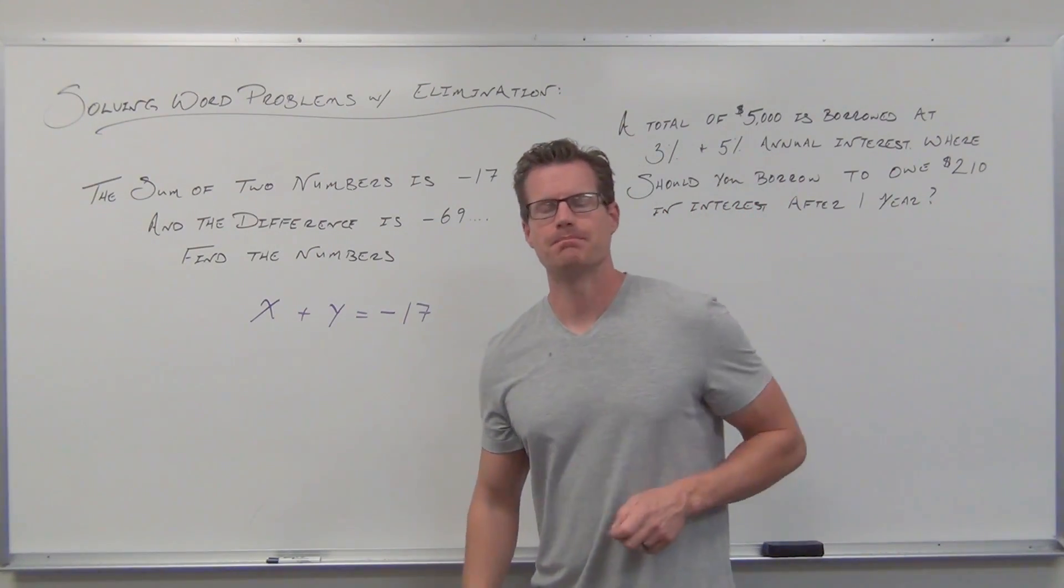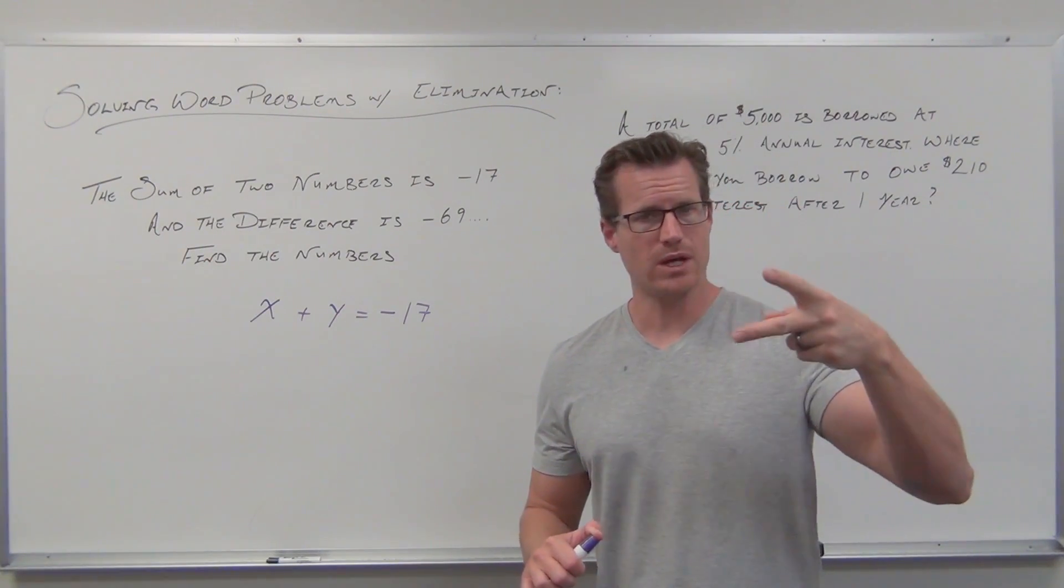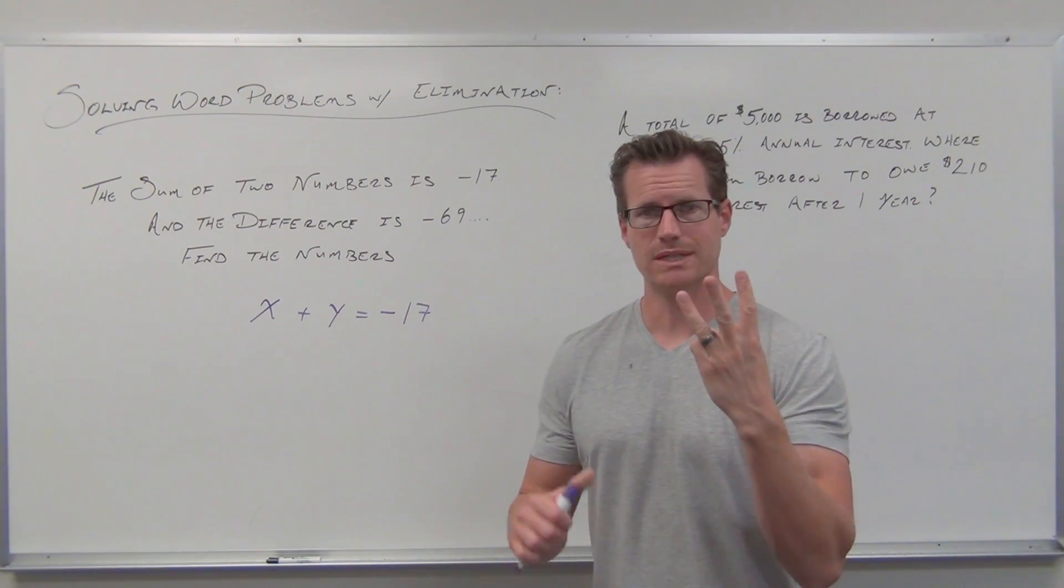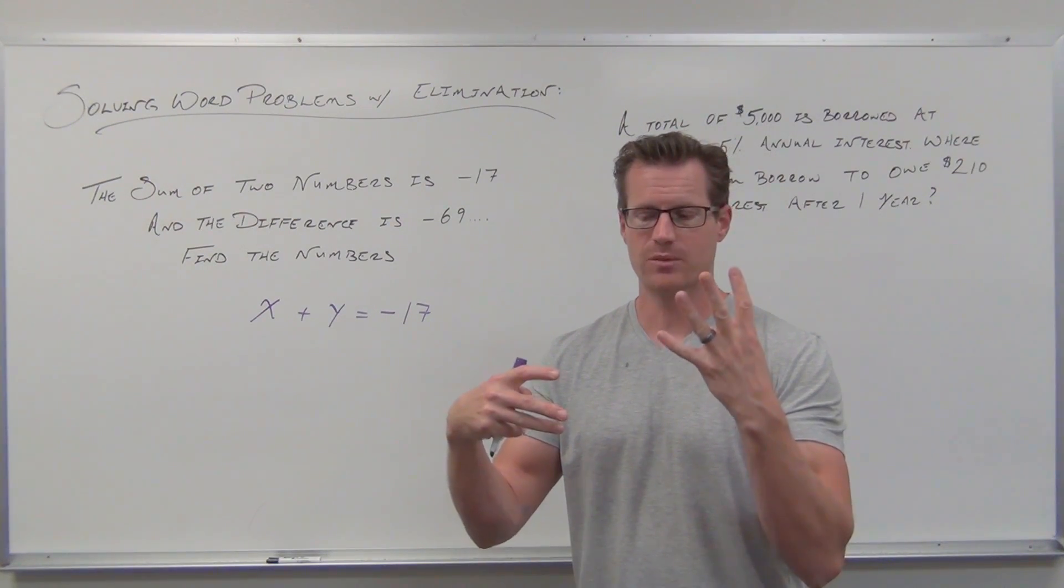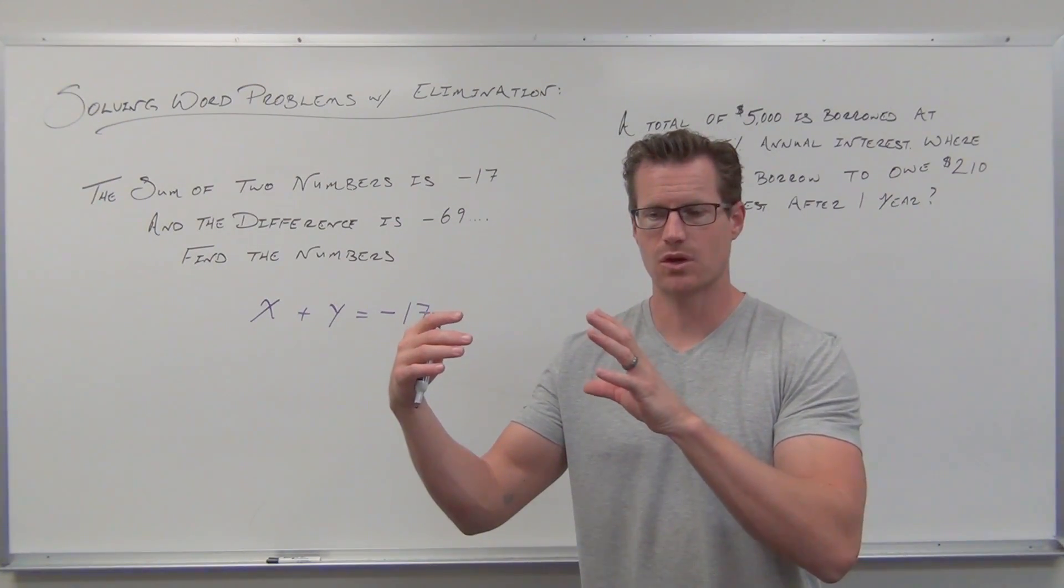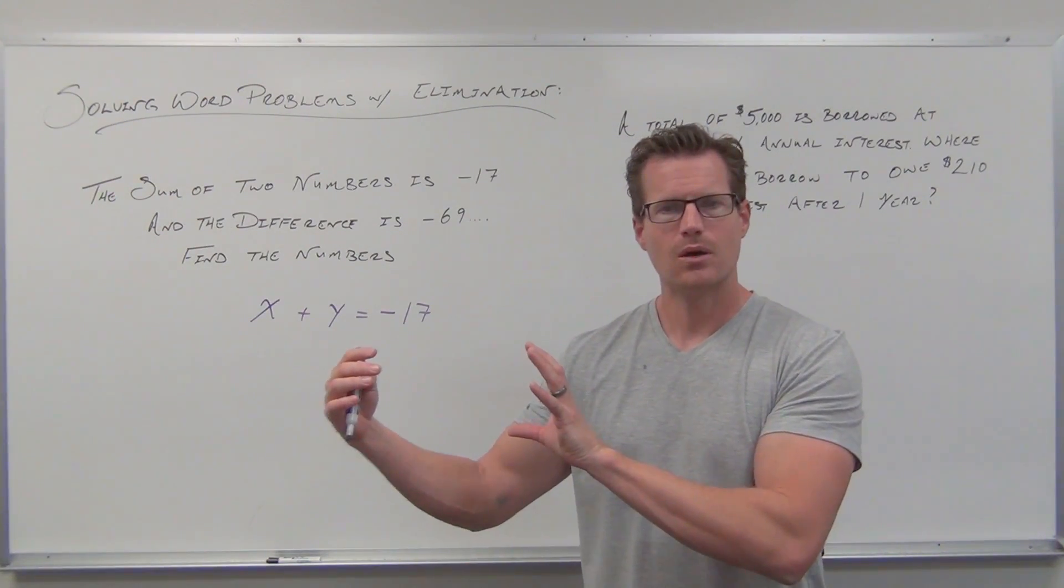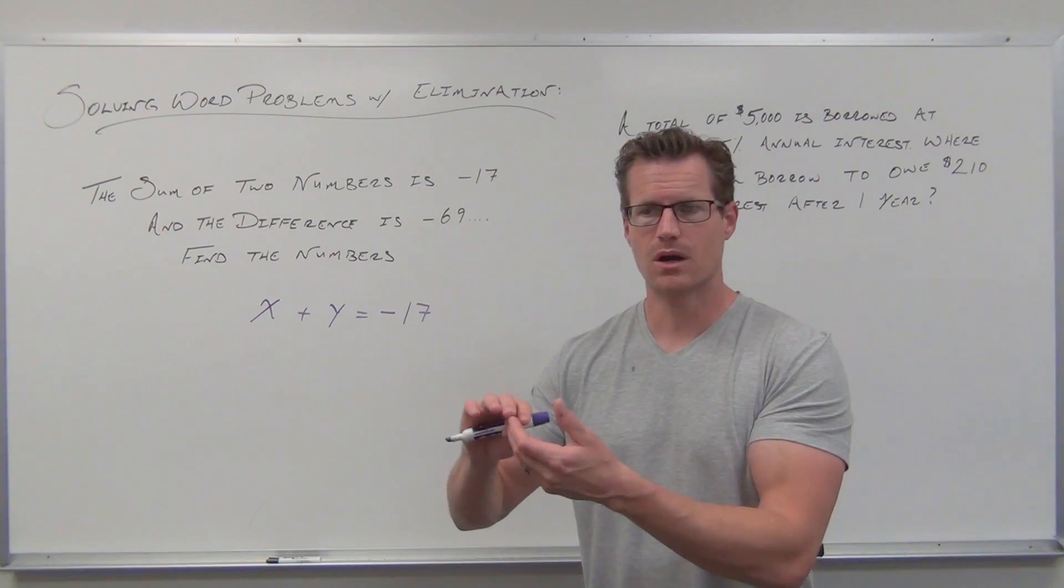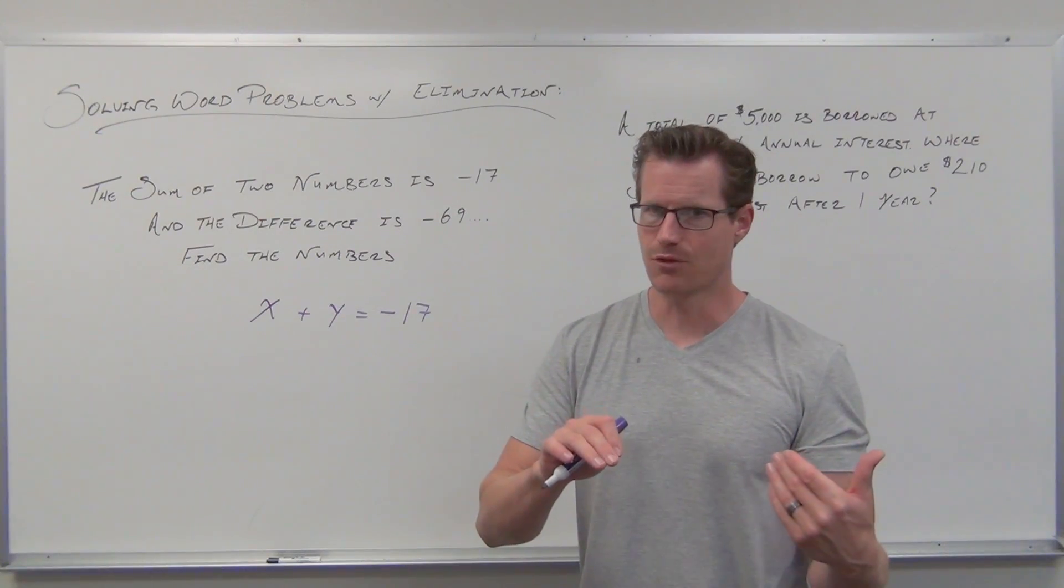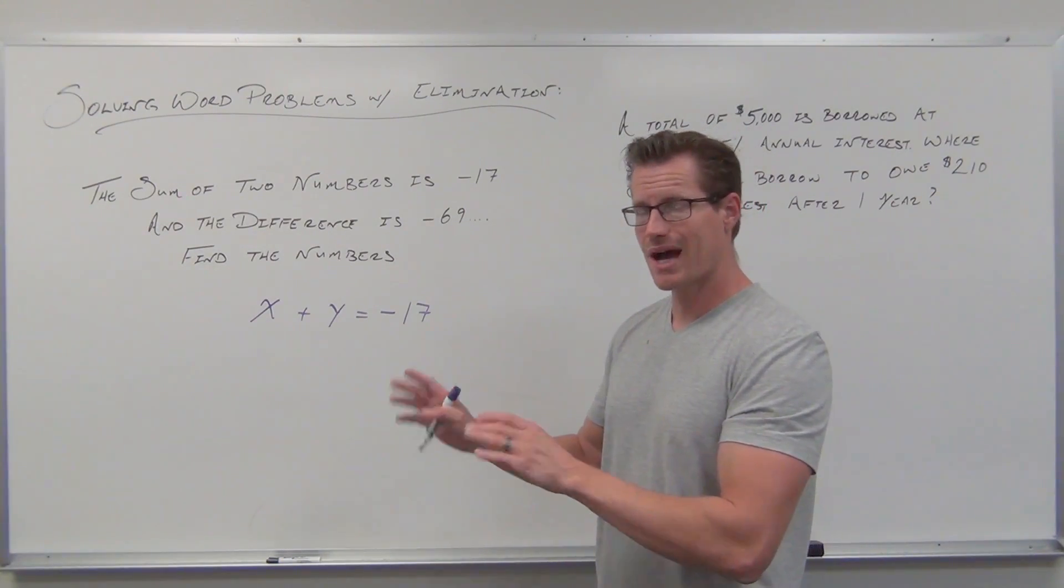The difference is negative 69. If you're going to pick two different variables, you need two different equations. You can extrapolate - three variables need three equations, four variables need four equations. That's when we start talking about matrices and Gaussian-Jordan elimination. But with two variables, I need two equations.